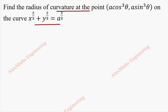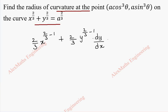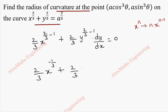We can take the curve and differentiate. So x^(2/3) differentiates to (2/3)x^(2/3 - 1), plus y^(2/3) differentiates to (2/3)y^(2/3 - 1) into dy/dx, and the differentiation of the constant on the other side is 0. We have used the rule that the differentiation of x^n is n·x^(n-1). This gives us (2/3)x^(-1/3) + (2/3)y^(-1/3)·(dy/dx) = 0.